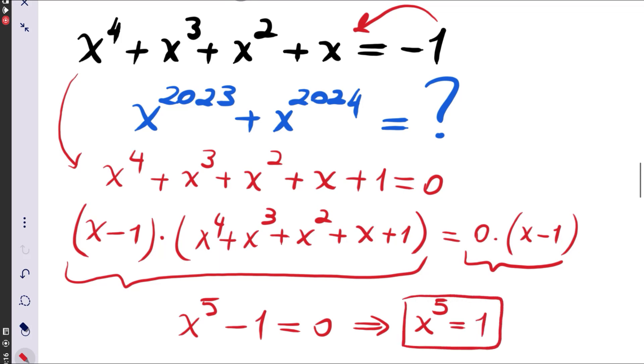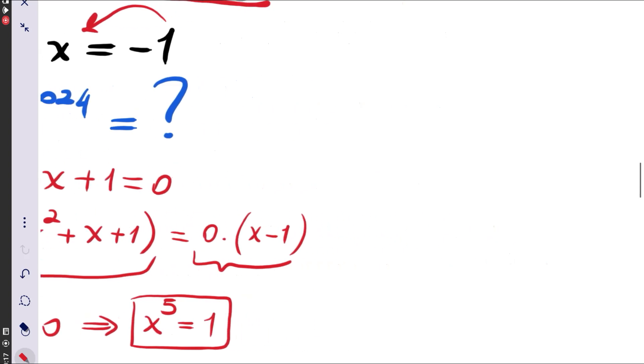This is very nice to use because this x to the power 2023 plus x to the power 2024 will be found by x to the power 5 is equal to 1. Let's continue this side.